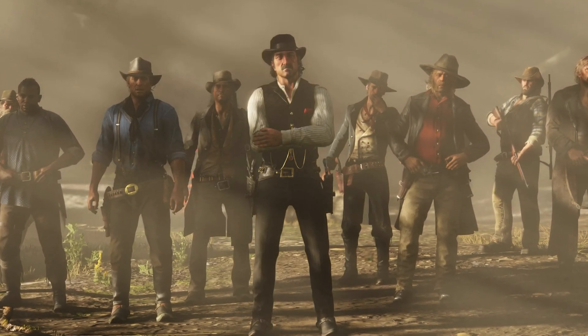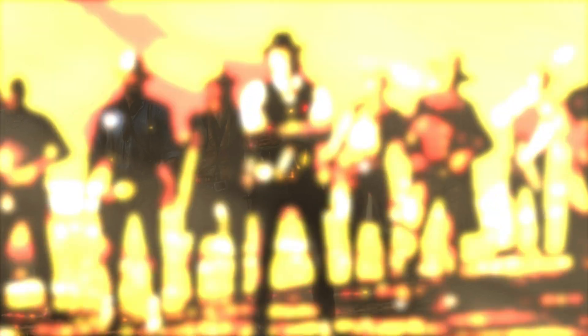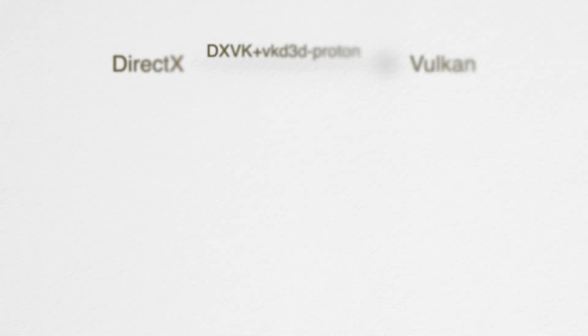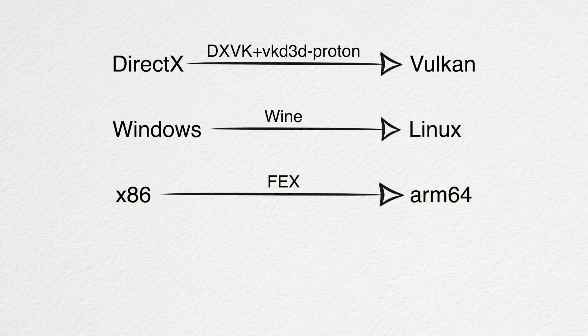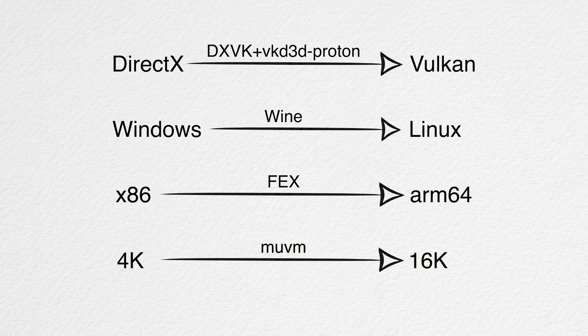To understand how complex everything is, I'll show you the layers through which translation occurs. DirectX is translated using DXVK and VKD3D-Proton to Vulkan — if the game supports Vulkan, this step is skipped. Wine is used to run Windows applications on Linux. FEX is used for x86 to ARM64 emulation. A micro virtual machine, MUV, is used to convert 4K pages to 16K.